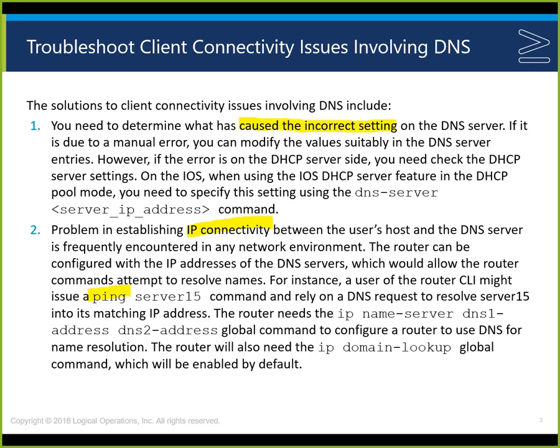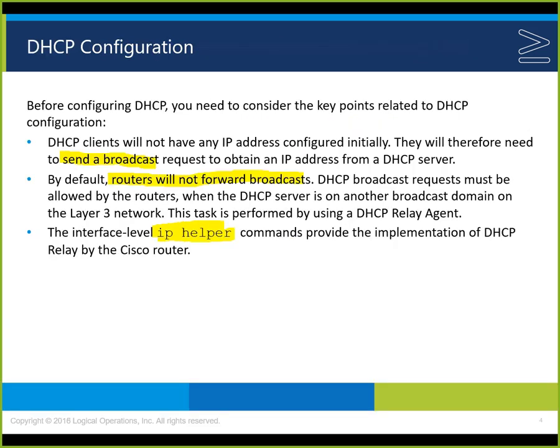Establishing connectivity between the host and the DNS server: in a network environment, the router can be configured with the IP address of the DNS server, which allows the router to resolve names. If we can ping the IP address but not the FQDN — the fully qualified domain name — think DNS as the issue. DNS can resolve it, but we still can't get to the resource, meaning we can't reach the DNS server.